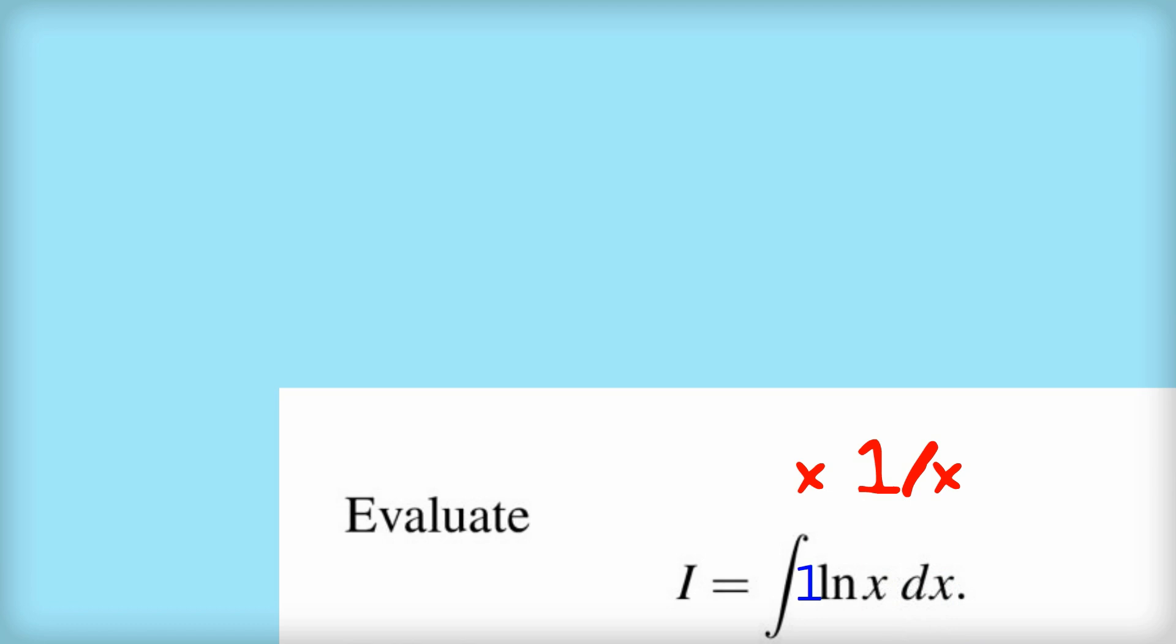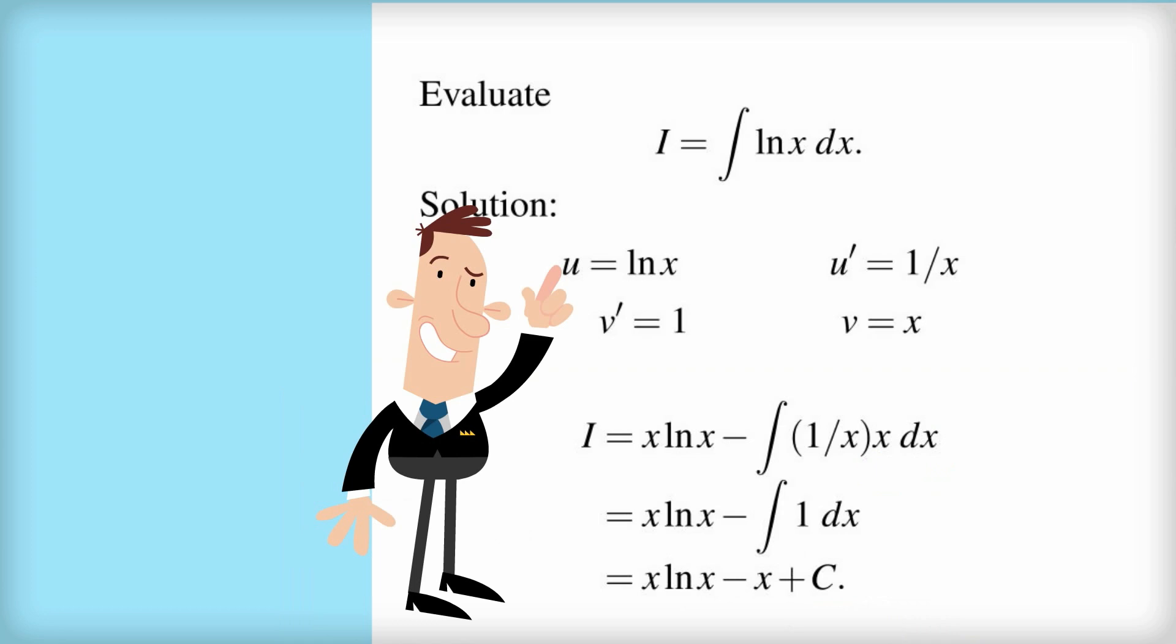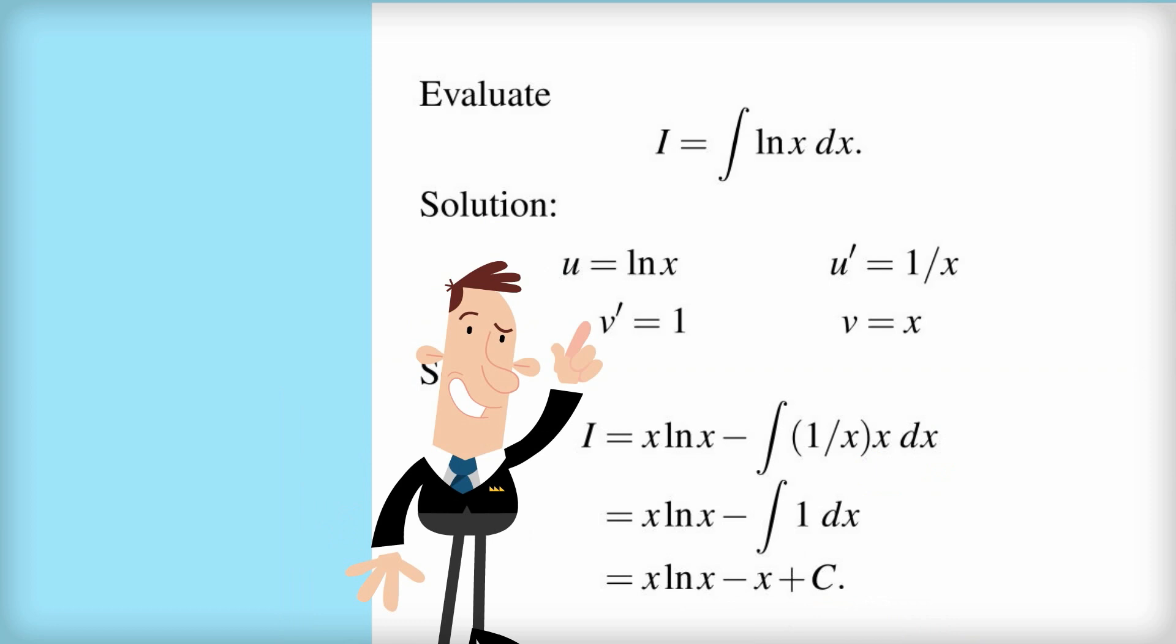So here's how the calculations look. I've put here u equals log x, and so u dash equals 1 on x. We said that we'd introduce this term 1 in, which means that v dash equals 1, and so v equals x.